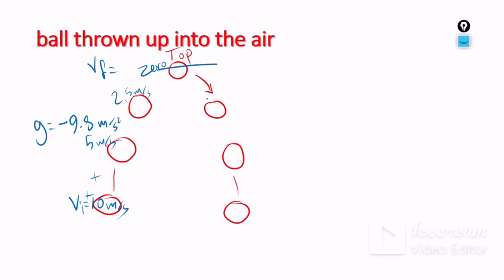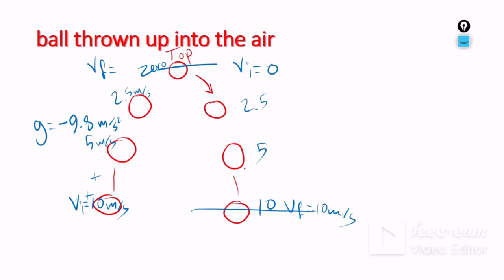On the way back down, vi = 0 at the top — it starts from rest. Then it speeds up faster and faster. Just before hitting the ground, vf equals approximately 10 m/s. Going down is the negative direction, so g = +9.8 m/s² here because the object is speeding up in the downward direction.